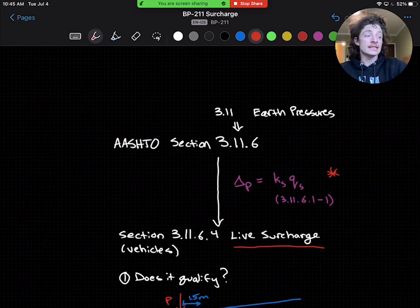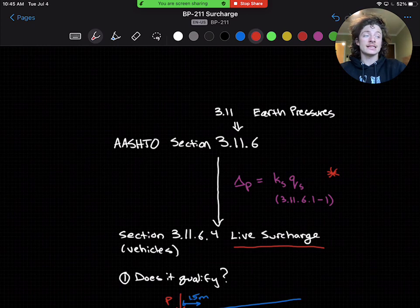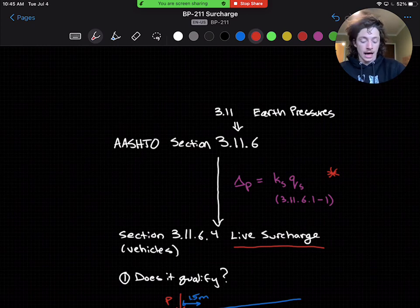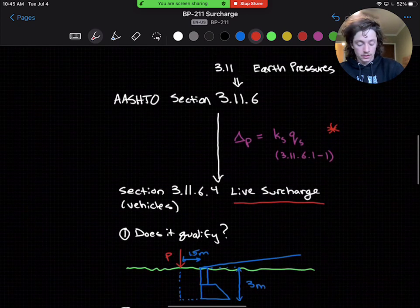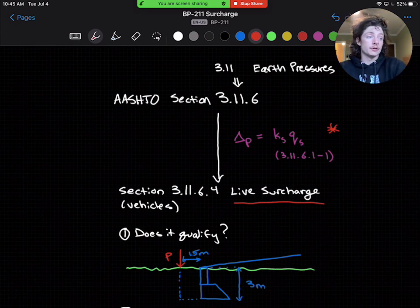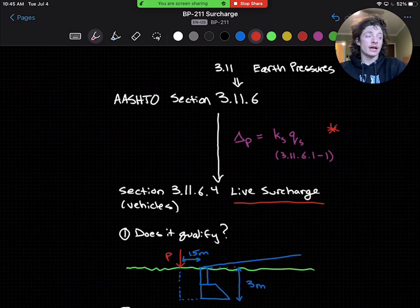First, we need to see if the surcharge load applies. The specifications describe that it has to be within a distance equal to one-half the wall height behind the back face of the wall. So a surcharge load applies, for example, if we have a 3-meter soil height and the vertical load is within 1.5 meters from the back of the anchor.